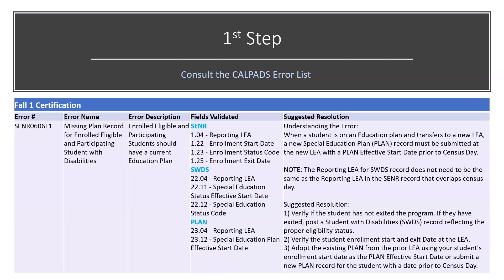That's why we walk through this. The error description, the third column from the left, gives you a little bit more information: enrolled, eligible, and participating students should have a current education plan.